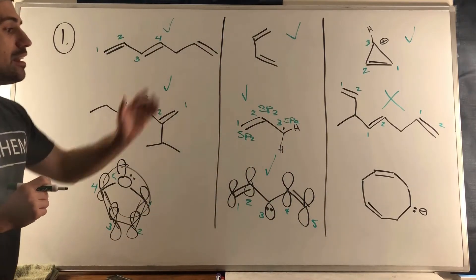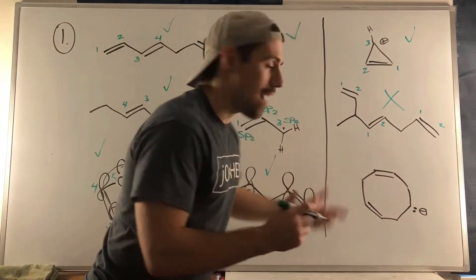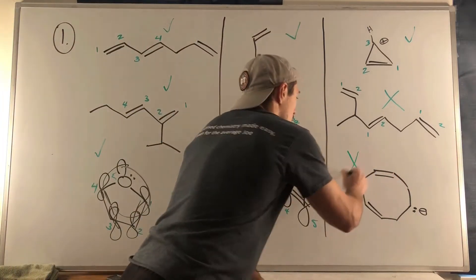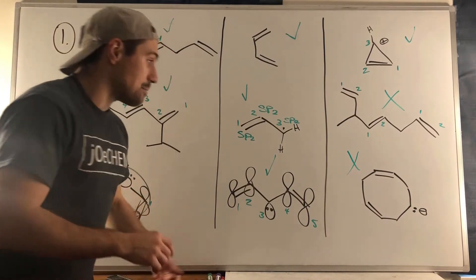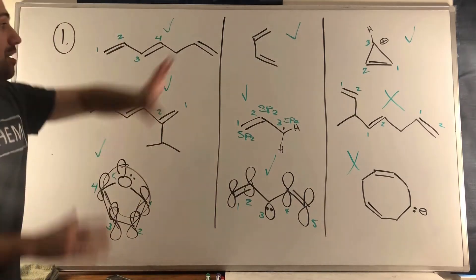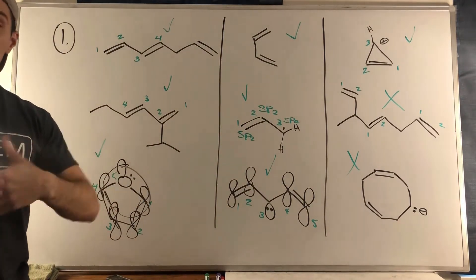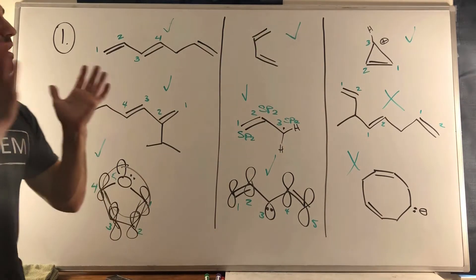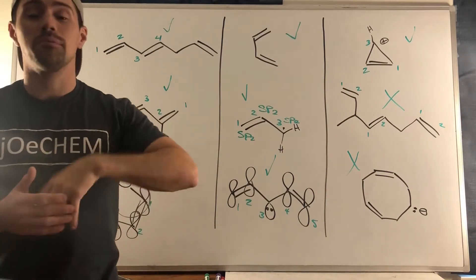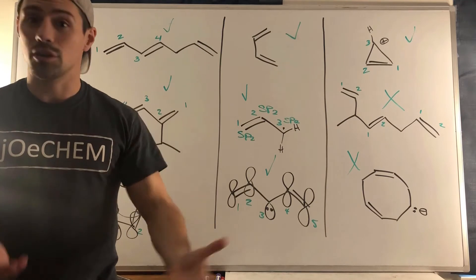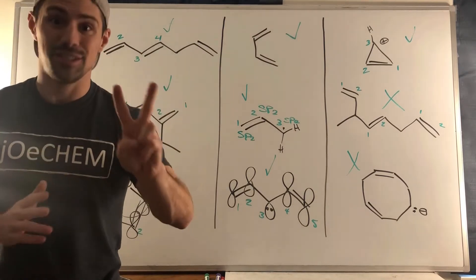This next structure — we see sp2, sp2, and this lone pair is going to be aligned parallel to these p orbitals, connecting the bridge. Because this lone pair plays ball and aligns itself with the p orbitals on both sides, this is in fact conjugated. The last structure has no consecutive string of sp2 atoms, so it is not conjugated. That does it for the nine structures in problem one.